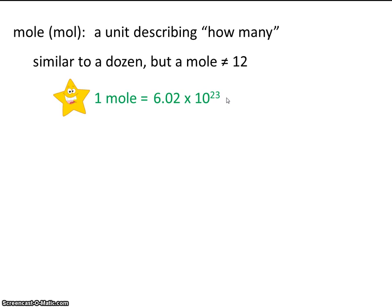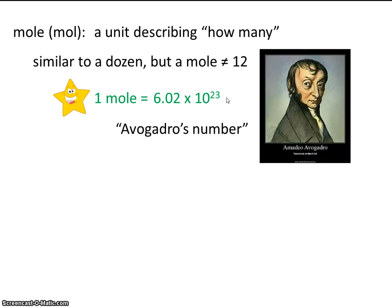Now this is very important. Commit this number to memory. This is the guy that came up with 6.02 times 10 to the 23rd. His name is Avogadro. So sometimes this number is referred to as Avogadro. We'll talk more in class about how this handsome gentleman developed this number.